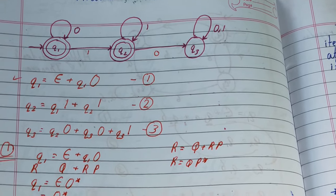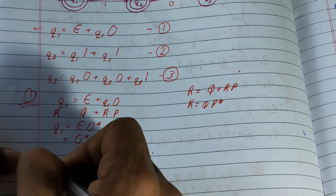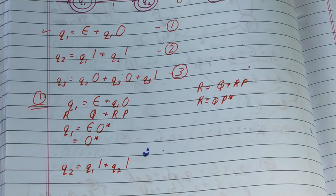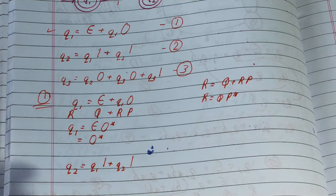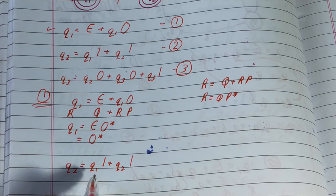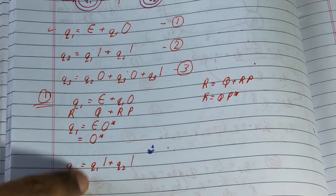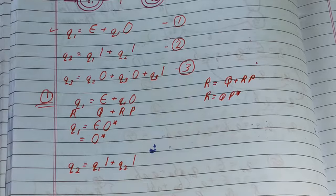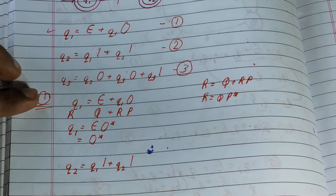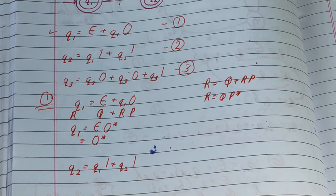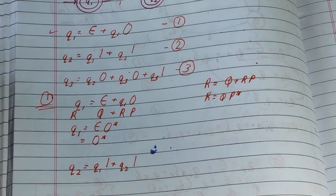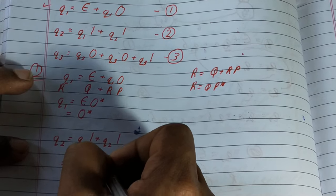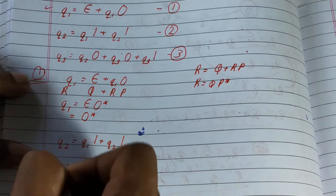Now we have to derive the regular expression for the second final state q2. We pick the equation q2 = q1·1 + q2·1. This equation is not linear because it contains more than one state. To make it linear, we substitute the value of q1 — which we already found — into this equation. So we replace q1 with 0*, giving q2 = 0*·1 + q2·1.